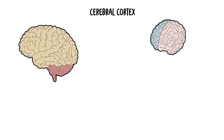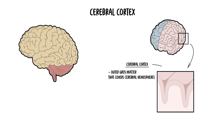Today we will be discussing the cerebral cortex of the brain, which refers to the outer layer of grey matter that covers the two cerebral hemispheres. The cerebral cortex contains nerve cell bodies and is approximately 2-4 mm thick. This layer has many folds — the elevations are called gyri and the grooves are called sulci.